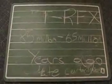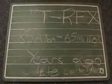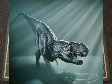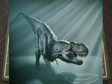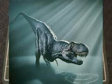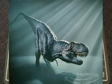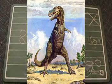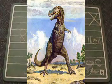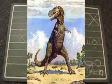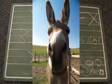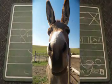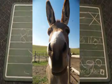The T-Rex — 85 million years ago, the carnivore dinosaur, the T-Rex, ruled the Earth. 40 feet long and 15 to 20 feet wide, weighing up to 7 tons. The great dinosaur could be found in Southern Alberta.